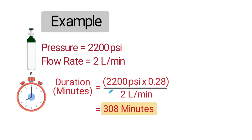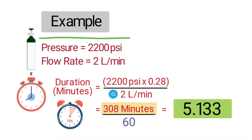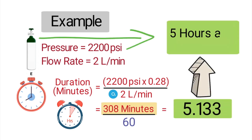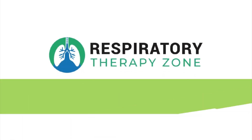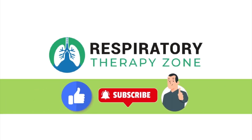308 minutes tells you approximately how long this tank will continue to deliver oxygen at a rate of 2 liters per minute. We can divide this number by 60 to convert minutes to hours. Therefore, this oxygen tank will last for approximately 5 hours and 8 minutes.